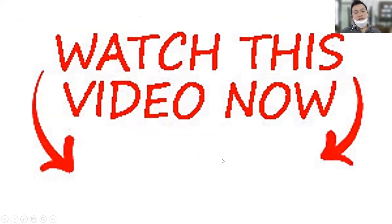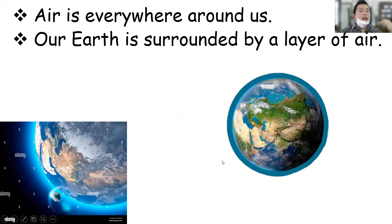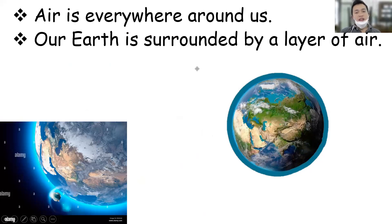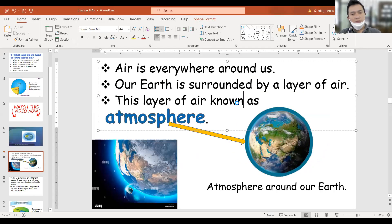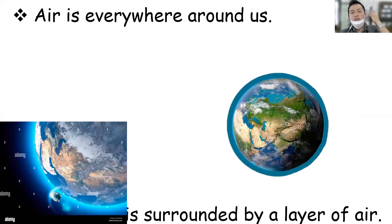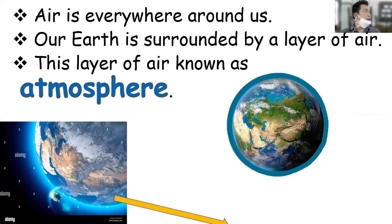We can find air around us everywhere. Our earth is surrounded by a layer of air, and this layer of air is known as the atmosphere. So the atmosphere — you can find this air only on the layer of the earth, the outside layer of the earth, and it really protects us.